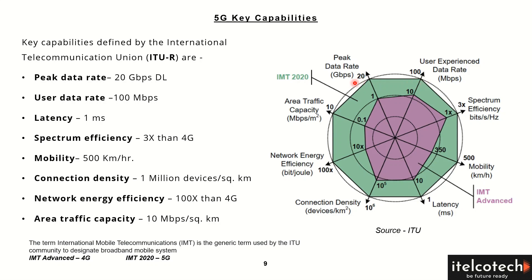This is the cell-level throughput to be achieved in downlink. For user-level throughput, that is 100 Mbps in downlink, as defined by ITU. In terms of spectrum efficiency — how many bits per second per hertz are being transmitted — it has to be increased with each new evolution, because spectrum is one of the costliest assets for any telco. The target is to get three times more spectrum efficiency in 5G compared to 4G.